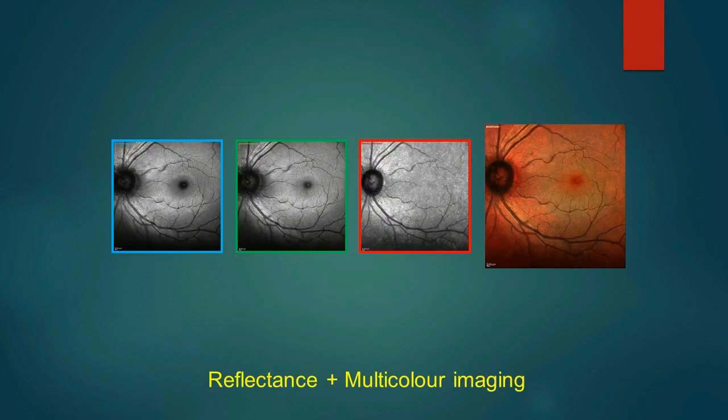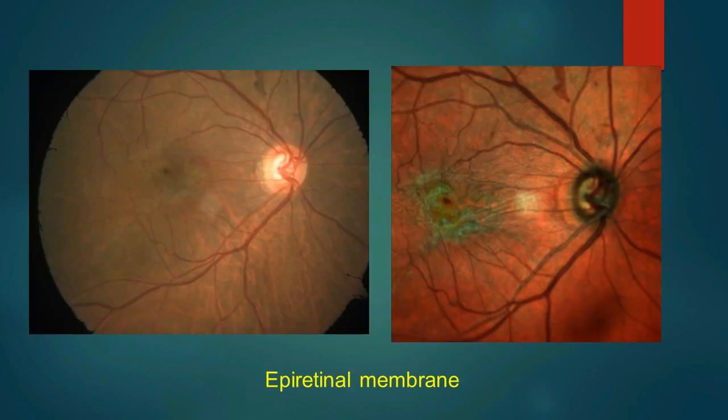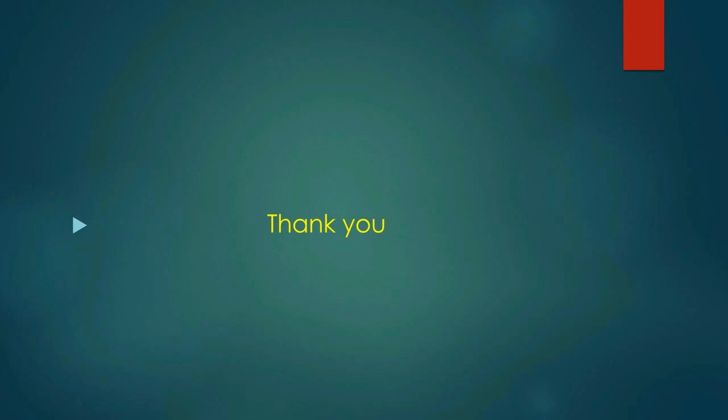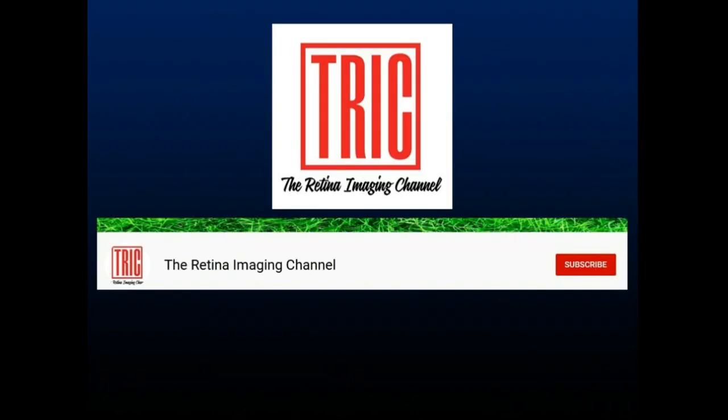Multicolor imaging is based on blue, green, and red reflectance. Here in the right image you can see how beautifully an epiretinal membrane is highlighted in green. Essentially, blue, green, and infrared channels give information from various layers of the retina. Thank you very much.